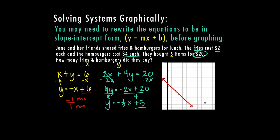Now for the second equation, y equals negative one-half x plus 5: my first point is at (0, 5), since my y-intercept is 5. My slope is negative one-half, so I go down 1, right 2 — down 1, right 2 — down 1, right 2. That's enough points to draw my second line.